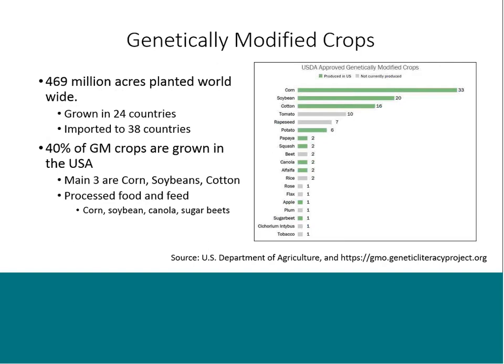What you were probably thinking of when you talk about GMOs is genetically modified crops — and that's where the bulk of the rest of this talk will be. 469 million acres of GMO crops are planted worldwide, grown in 24 different countries and imported into another 38. The United States makes up 40% of all worldwide GMO crop production. Here in the U.S., corn, soybean, and cotton are the three most commonly grown genetically modified crops.